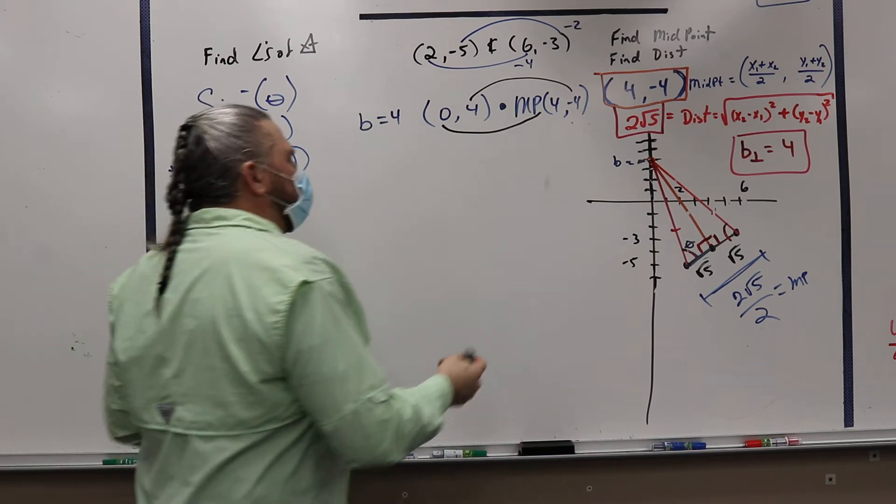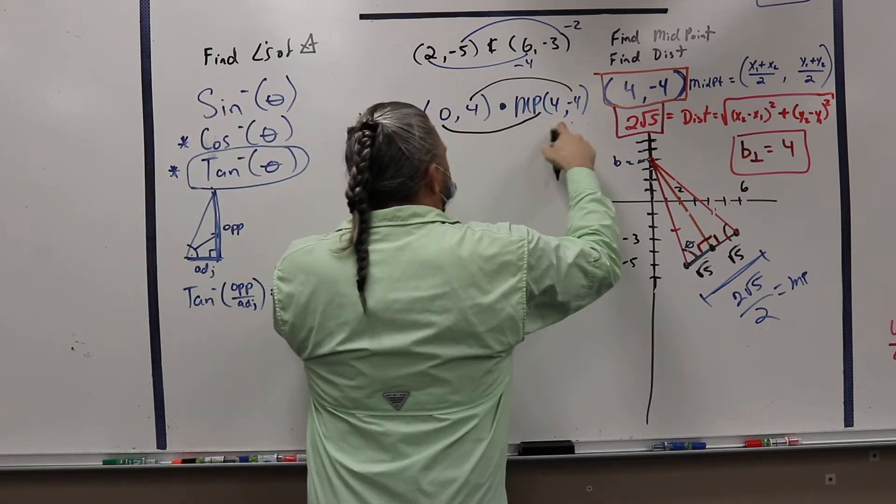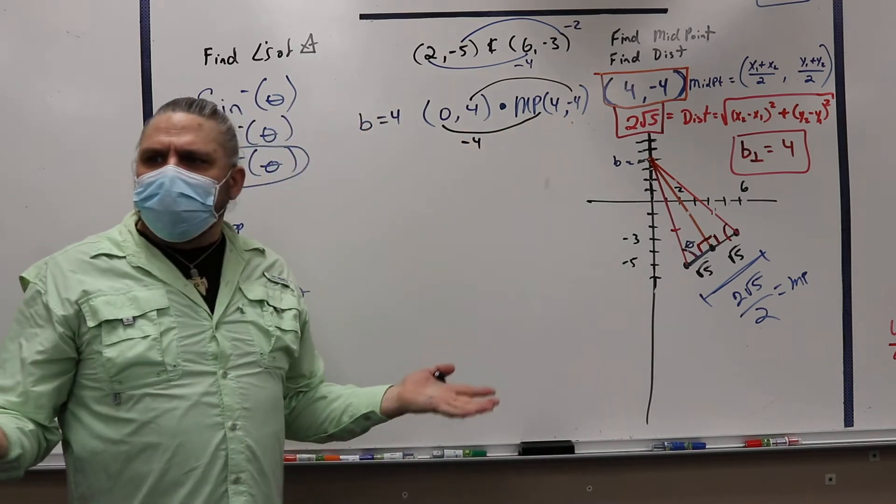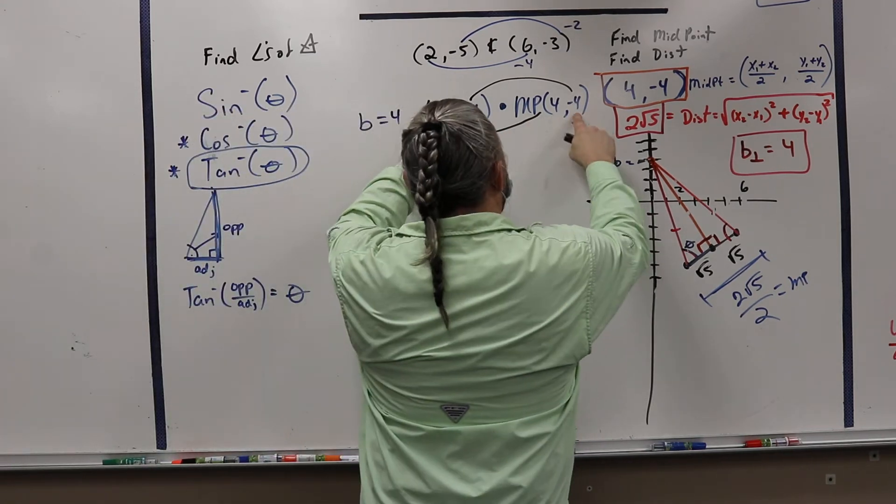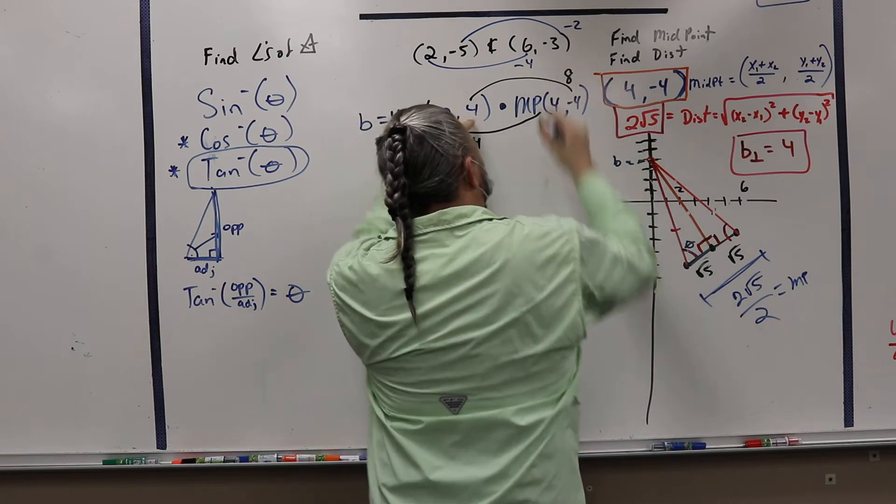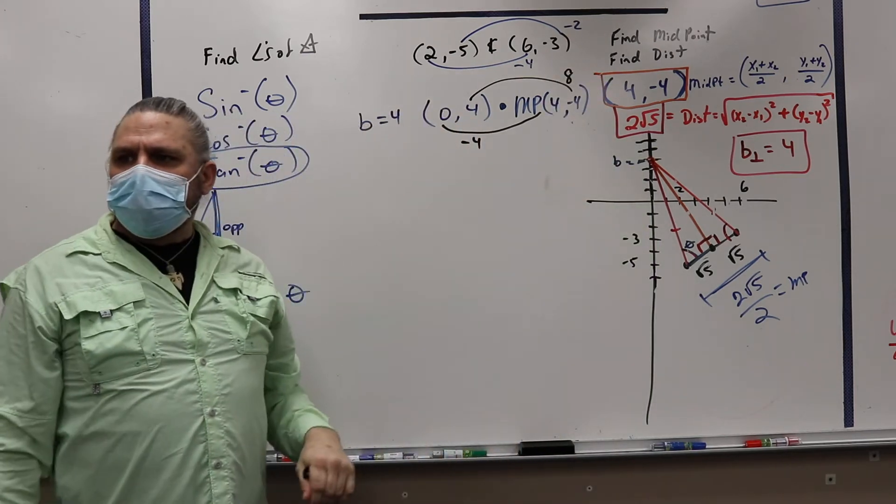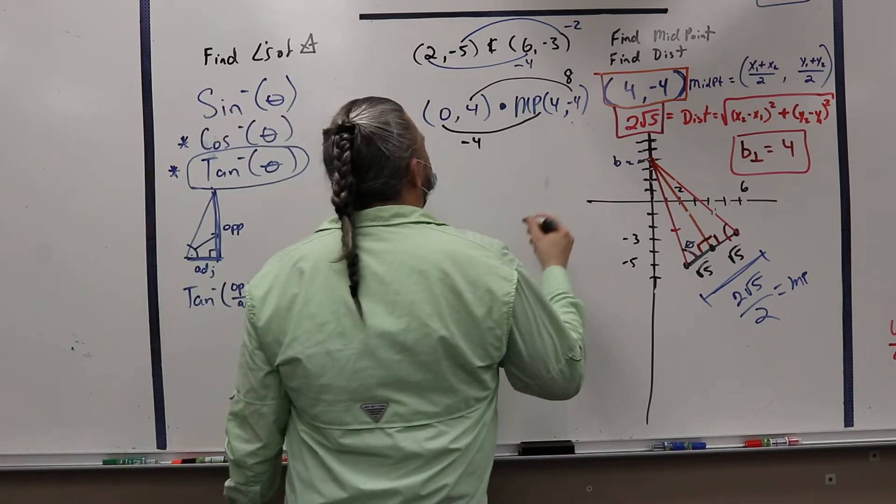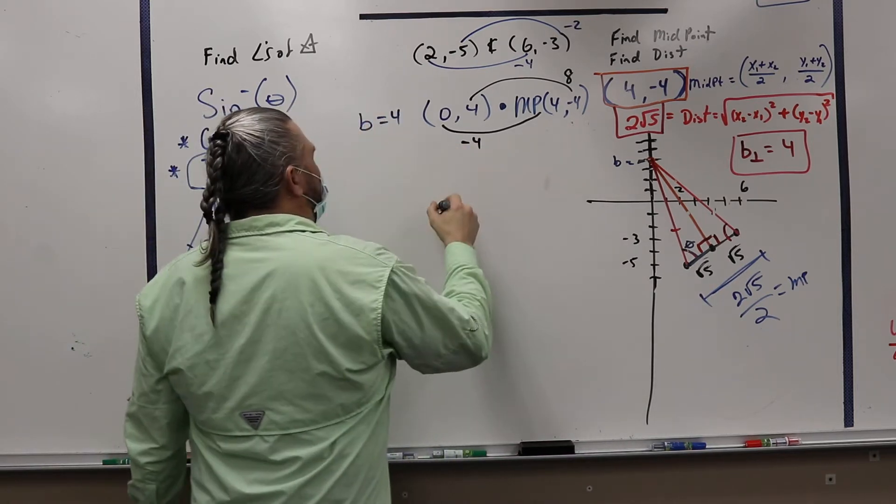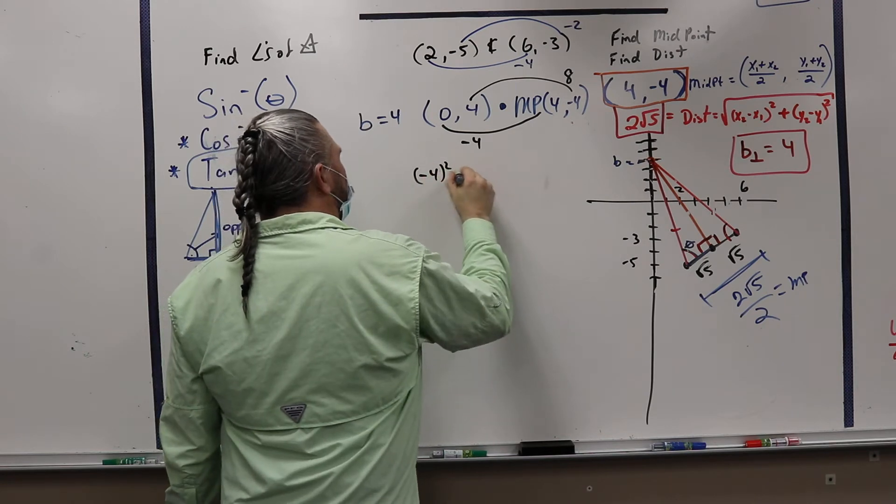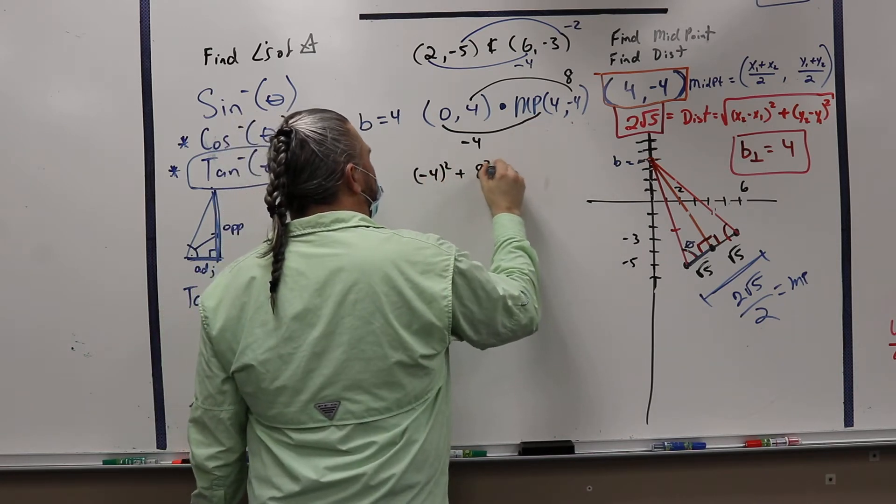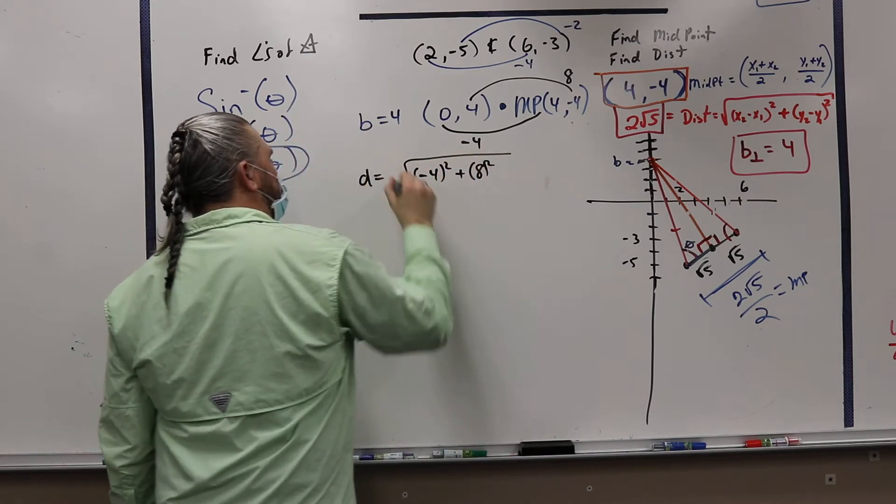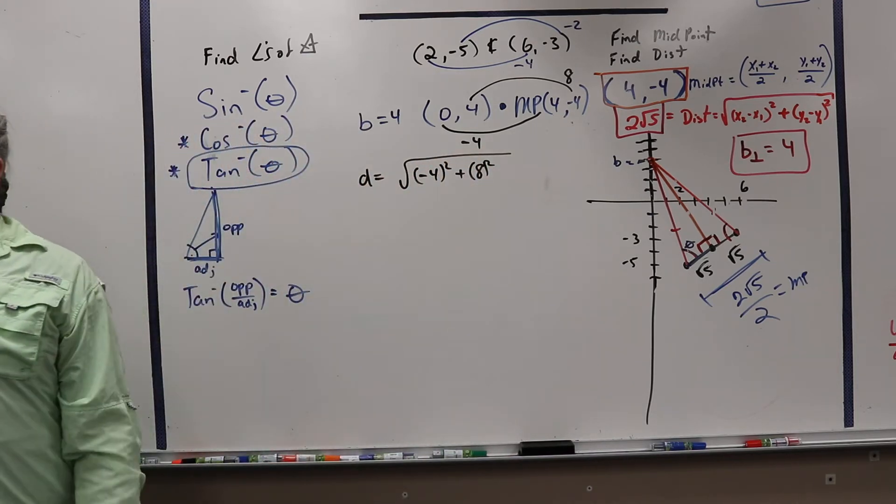Does that make sense? So my x's is 0 minus 4, which is minus 4. Right? And then 4 minus minus 4 would be 8. So then what I have there is negative 4 squared plus 8 squared, all square rooted. That's the distance between those two points.